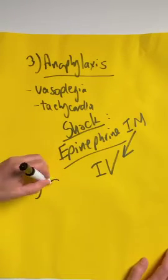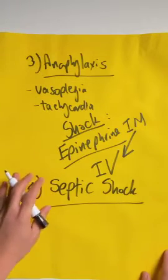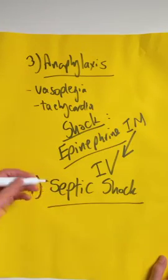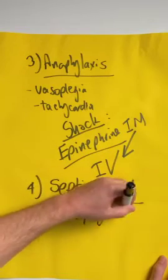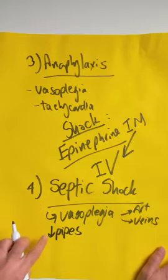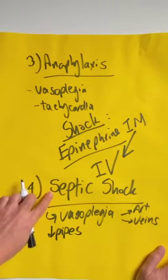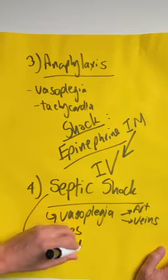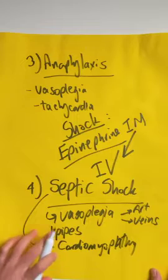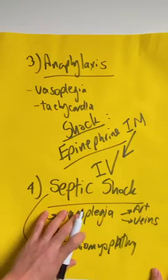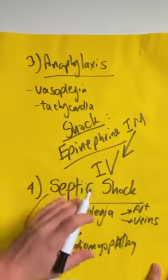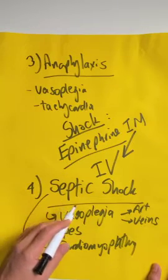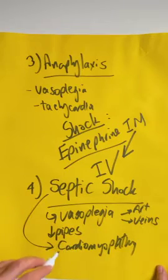The fourth type of distributive shock is septic shock — something many of us see daily. The bacteria our immune system is exposed to cause vasoplegia of arteries and veins, decreasing the pipes. What makes septic shock interesting is that sepsis itself can also cause a form of cardiogenic shock — septic-induced cardiomyopathy — that decreases systolic function. Typically with distributive shock we rely on increased cardiac output to compensate, but when patients have septic cardiomyopathy, the person becomes vasodilated and the heart can't increase to compensate.